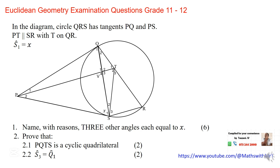In the diagram, circle QRS has tangents PQ and PS. PT is parallel to SR with T on QR. The most important part of geometry is that the question will direct you in some way. When you read the question, there are certain words that indicate the theorems being tested by that particular question.